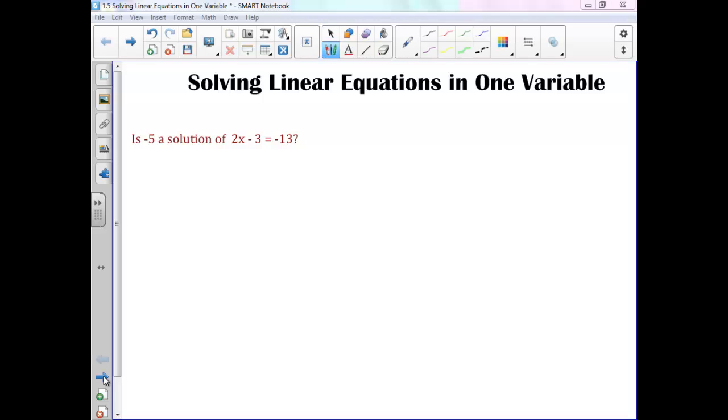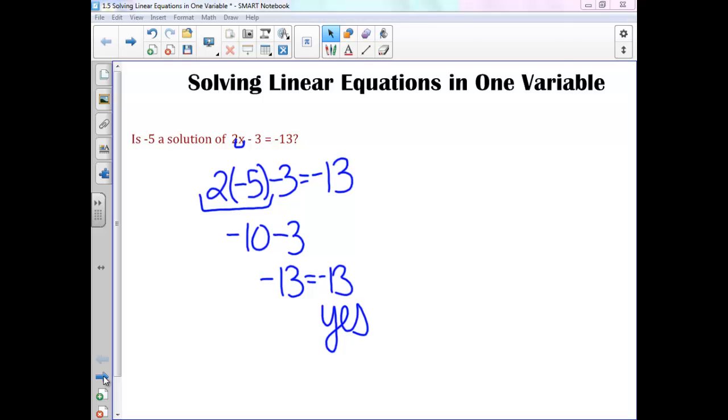What we need to do is plug in our negative 5 for our variable and see if it works. So 2 times negative 5 minus 3 equals negative 13. 2 times negative 5 is negative 10 minus 3, so negative 13 equals negative 13. So yes, it is. If you got two numbers that didn't equal each other, your answer would be no.